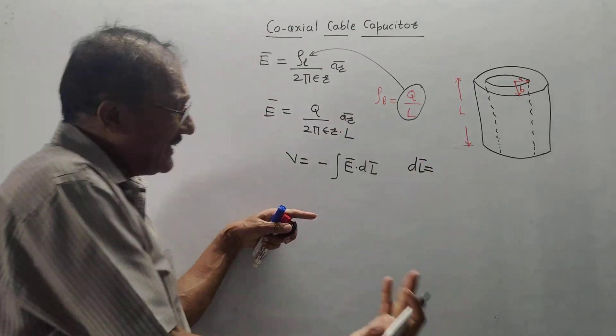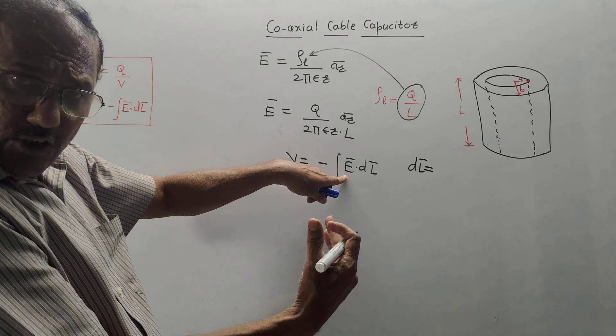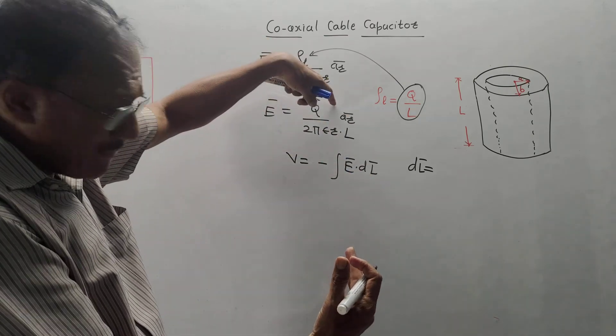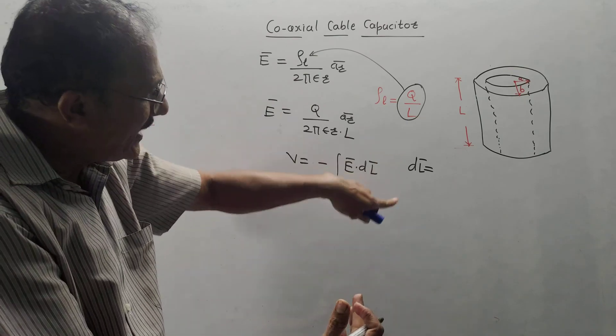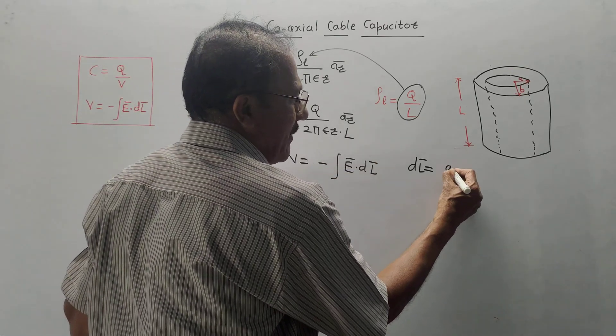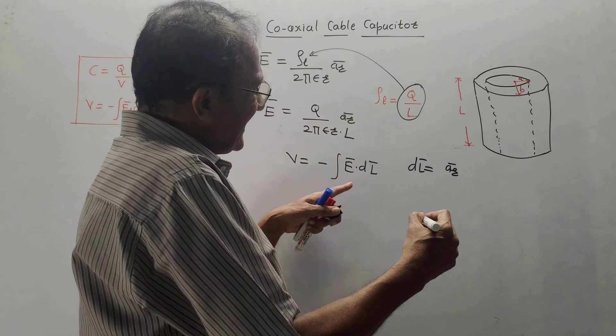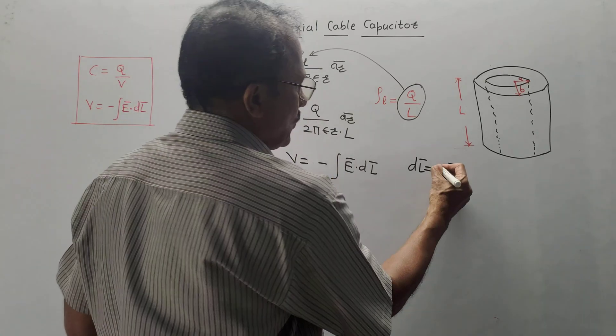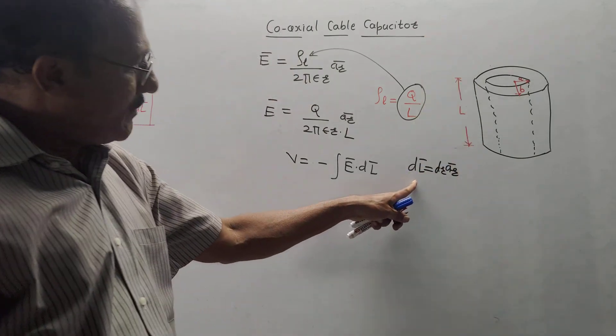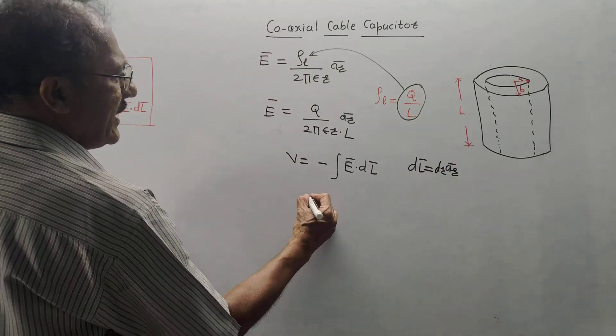You are taking dot product of e bar and D L bar. Whatever direction of e bar you have, you must assign same direction to the D L bar. So, D L bar is along AR bar and since it is related to AR bar, R is the radius. So, it is D R AR bar. Put the values.